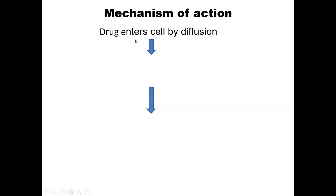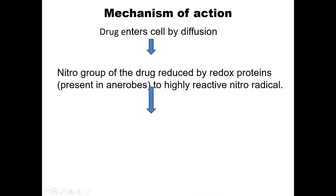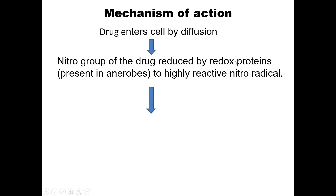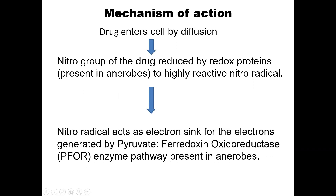We shall begin with the mechanism of action. This drug enters the cells by diffusion. Once it enters the cells, the redox proteins, which are present inside the cells of the anaerobes and the protozoa, convert the nitro group of this drug to a highly reactive nitro radical. The nitro radical acts as an electron sink for the electrons which are generated by the pyruvate ferredoxin oxidoreductase enzyme pathway, which is present in the anaerobes.